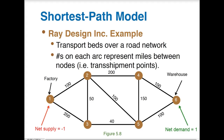In this example, we're looking at a company that wants to transport beds over a network. The numbers on each arc represent the miles between each node — in other words, the number of miles between a particular location. We start from our factory, go to certain destination locations, and eventually get to the warehouse. If this is a long trip, they may need to stop somewhere to pick up an item or get gas.